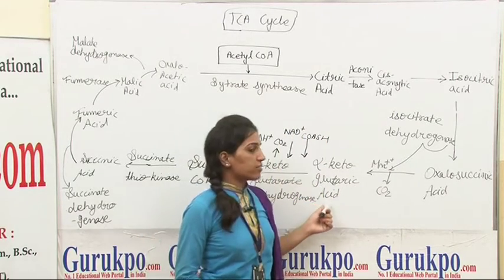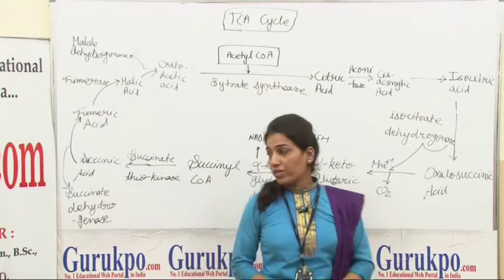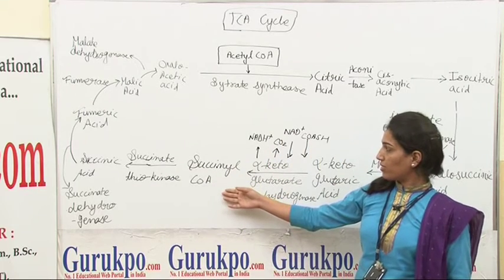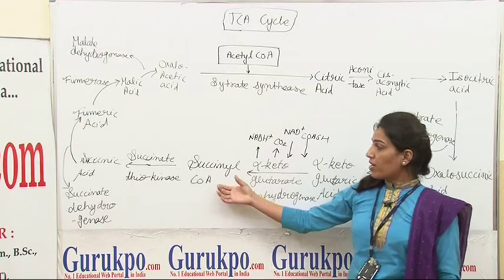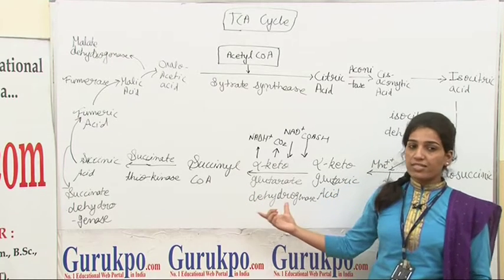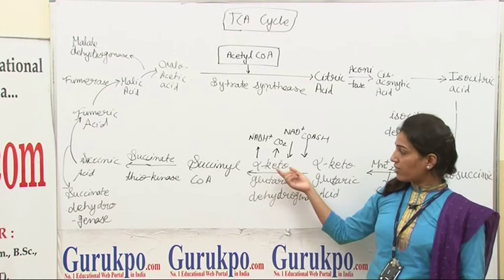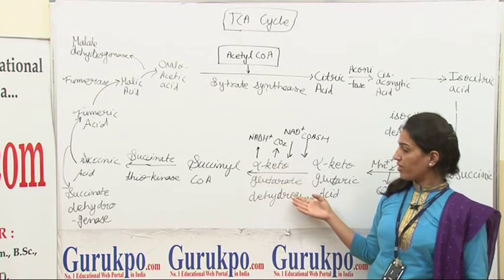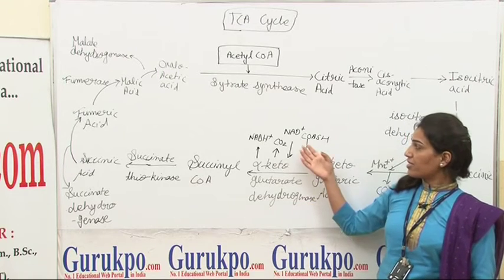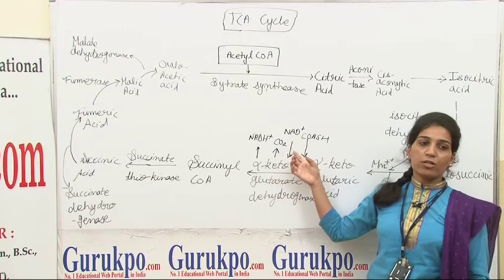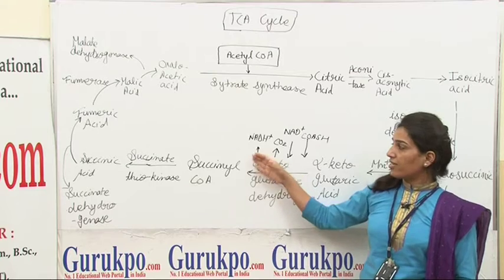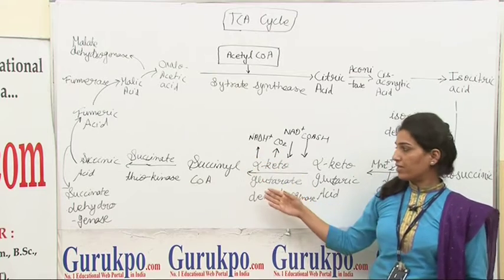This alpha-ketoglutaric acid converts into succinyl coenzyme A. This reaction takes place by the enzyme alpha-ketoglutaric dehydrogenase. In this reaction, NAD+ is required and NADH+ is released.